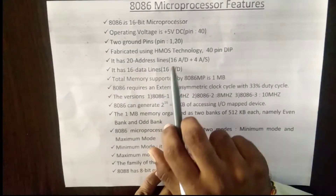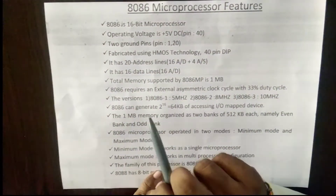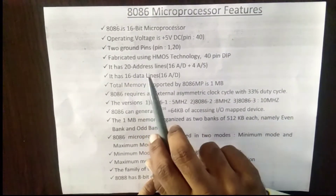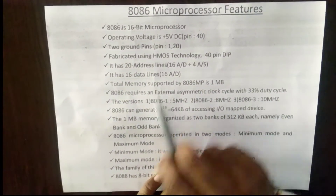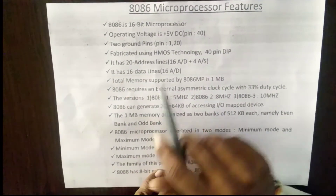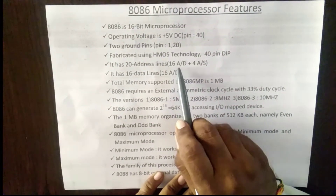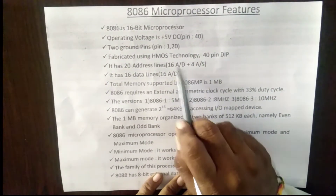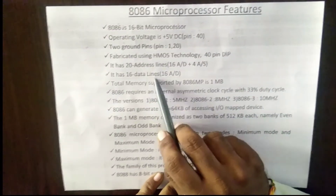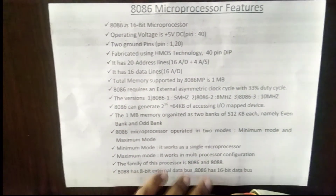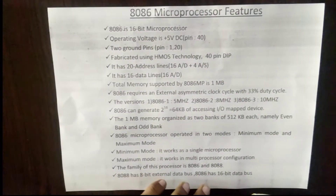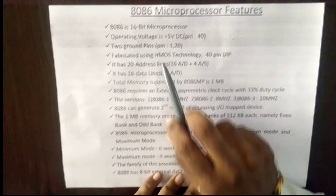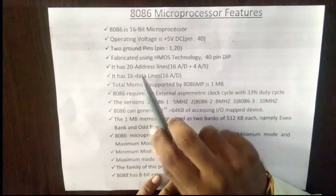The 8086 has 20 address lines and 16 data lines. These 20 address lines use multiplexed address and data lines — 16 lines can be used as both address lines and data lines. To demultiplex these address and data lines, the 8086 uses an Address Latch Enable (ALE) pin.